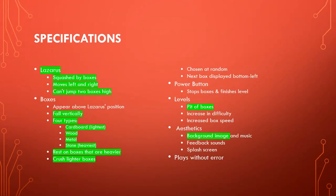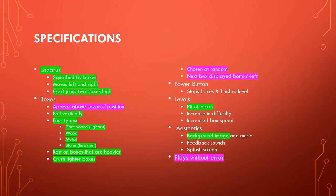So far in making this game we've ticked off most of the specification boxes for Lazarus, we've created a bit of boxes and we have a background image and music. In this one we're going to use a controller object to make the boxes appear above Lazarus's position, make the boxes be chosen at random, display the next box in the bottom-left corner of the screen, then test it and make sure it plays without error.